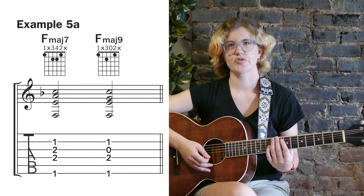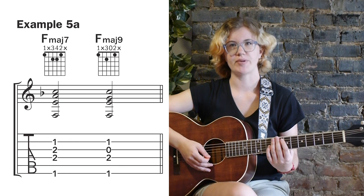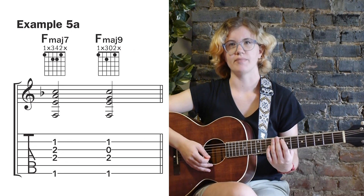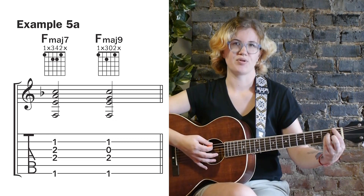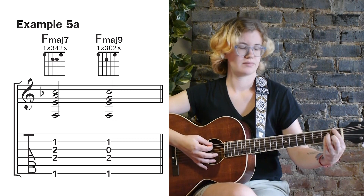Example 5a shows us how to get to F major 9 from F major 7 using a couple of closed voicings. Here's example 5a.